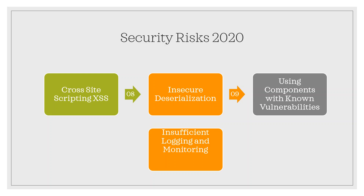Broken access control occurs when the restrictions on what authenticated users are allowed to do are often not properly enforced. Attackers can exploit these flaws to access unauthorized functionality and data, such as accessing other users' accounts, viewing sensitive files, modifying other users' data, or changing access rights.